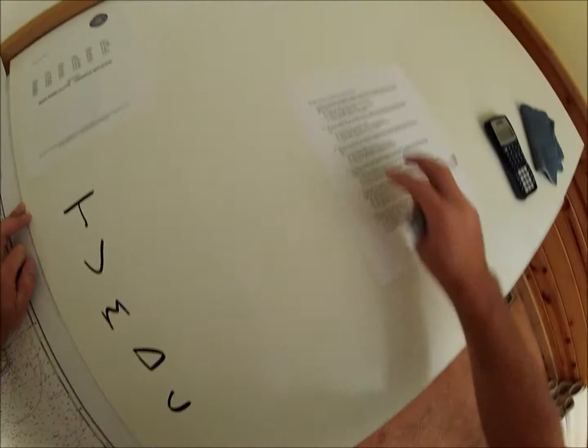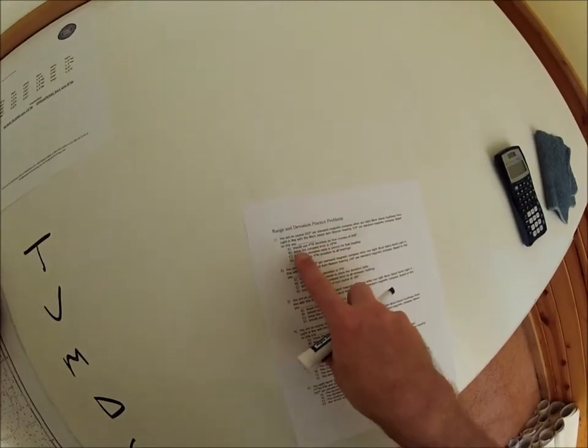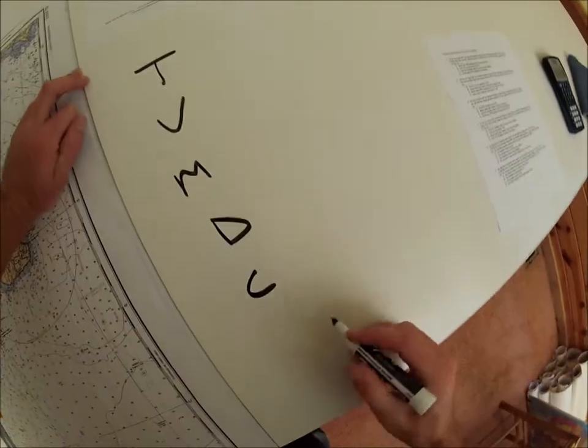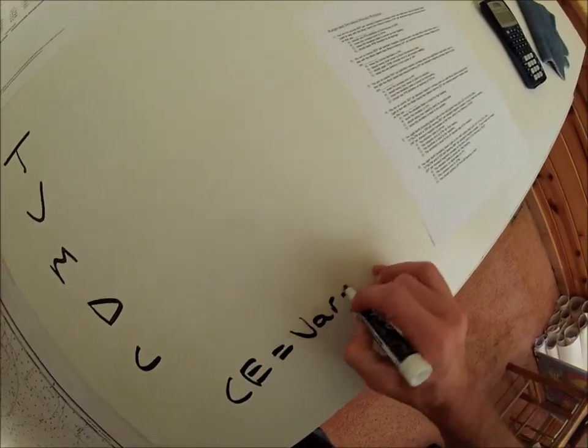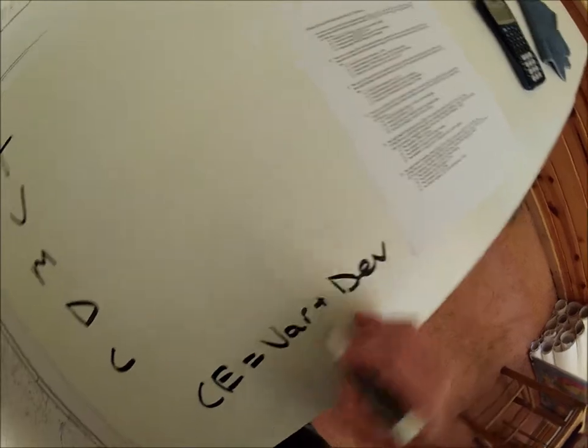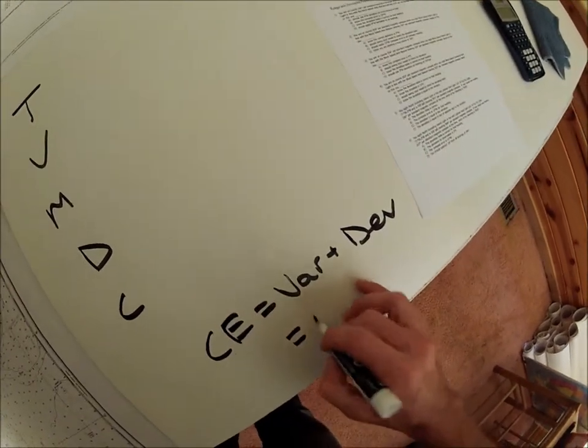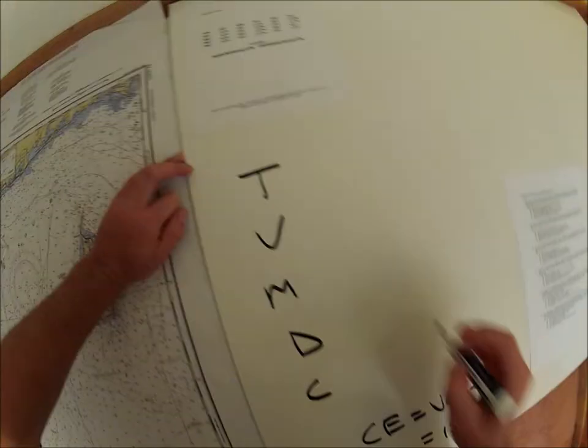Sometimes it asks about compass error, right? One of these asked about the compass error is 19 west. Well, compass error equals the variation plus the deviation. We know the variation, 15 west. We can fill that in.